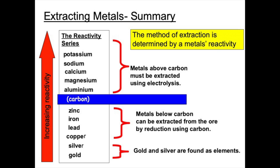The least reactive metals are the easiest to extract from their ores. This is because these metals are found as elements and not compounds, so no chemistry is required to extract the metal. All we have to do is remove the metal from the rock that surrounds it. If we have a more reactive element, these are found as compounds and chemistry is required to extract the metal. And if we have very reactive metals such as potassium, sodium and aluminium, we require electricity to remove that metal from the metal ore.